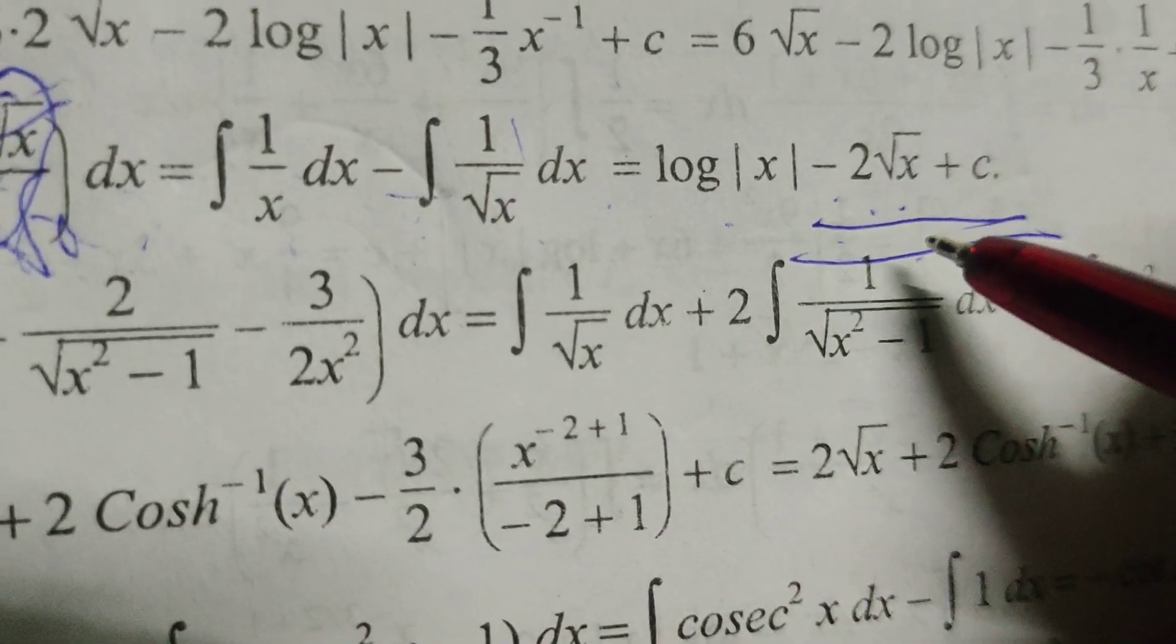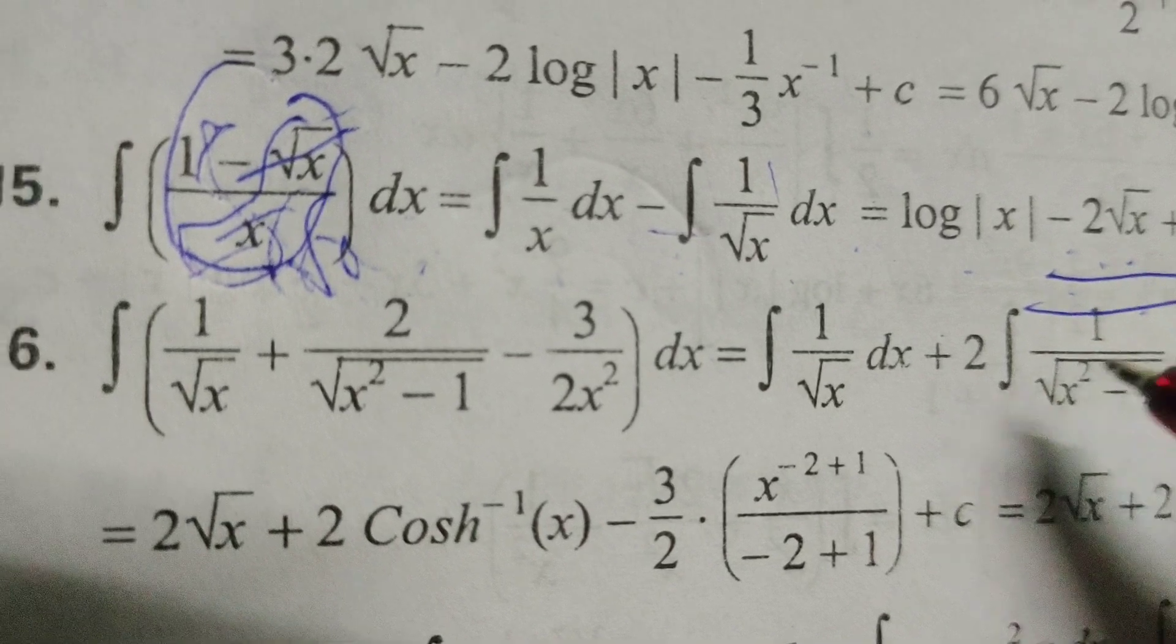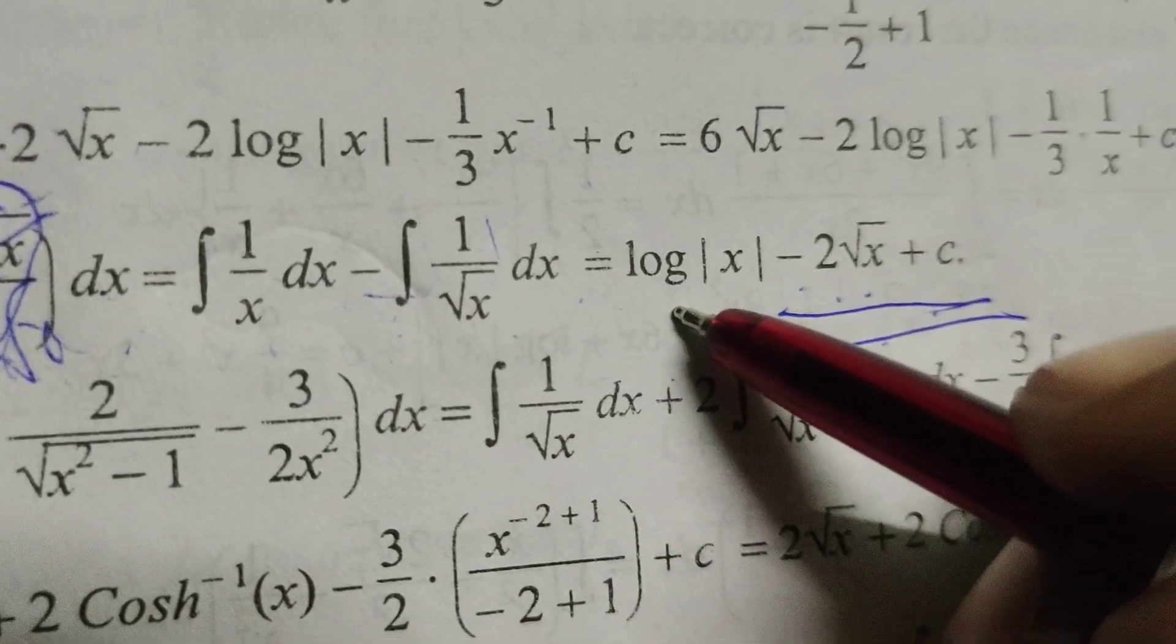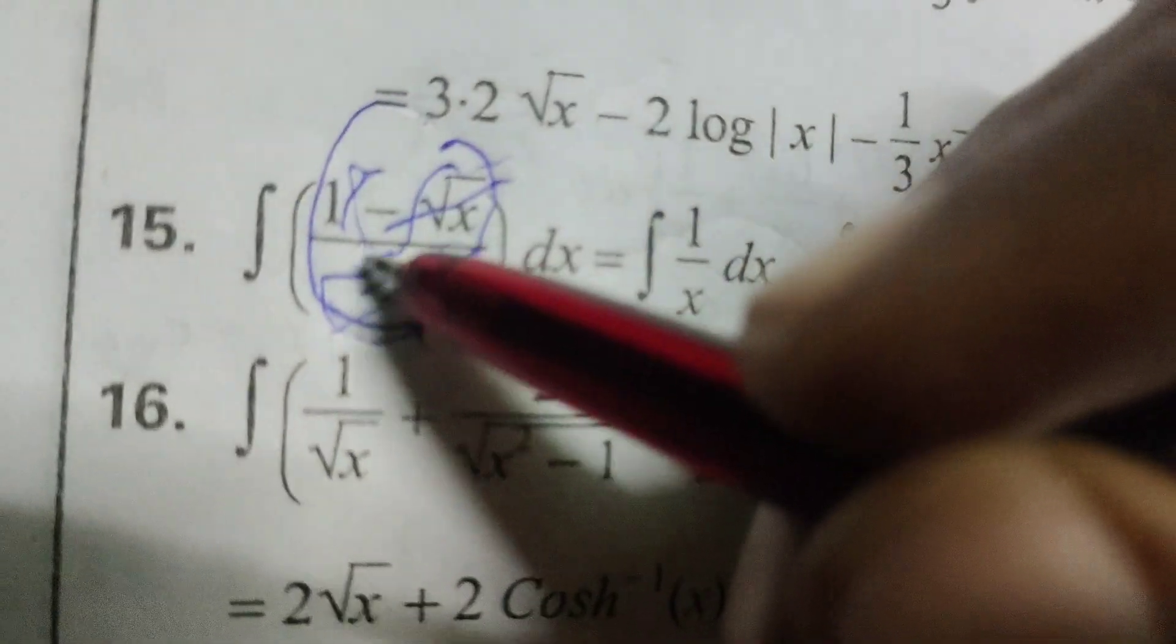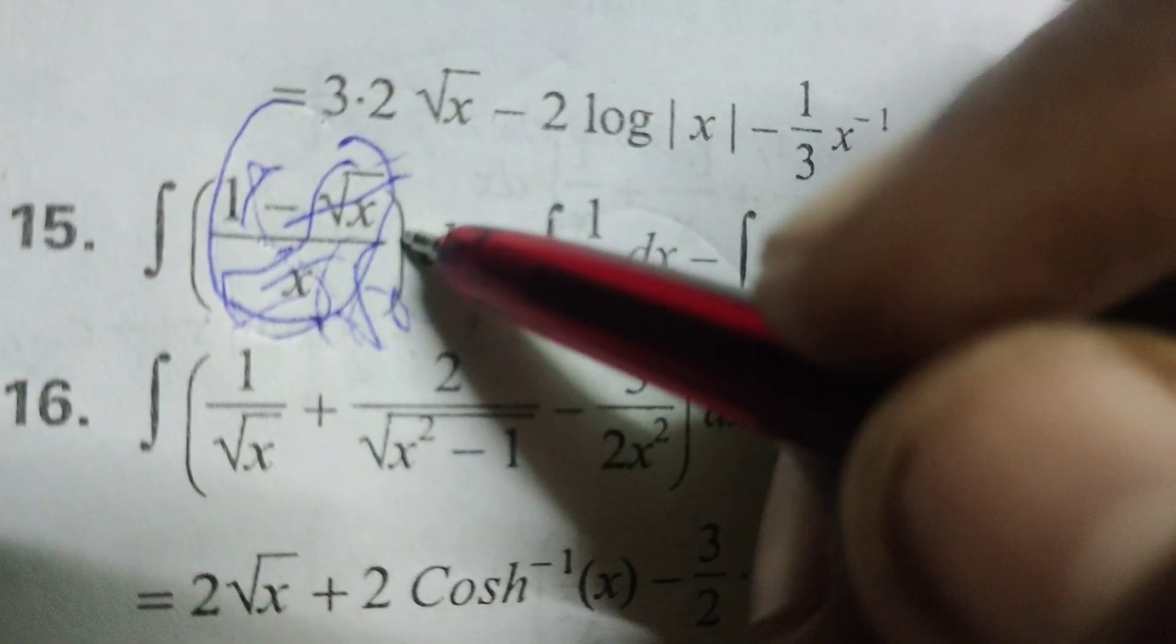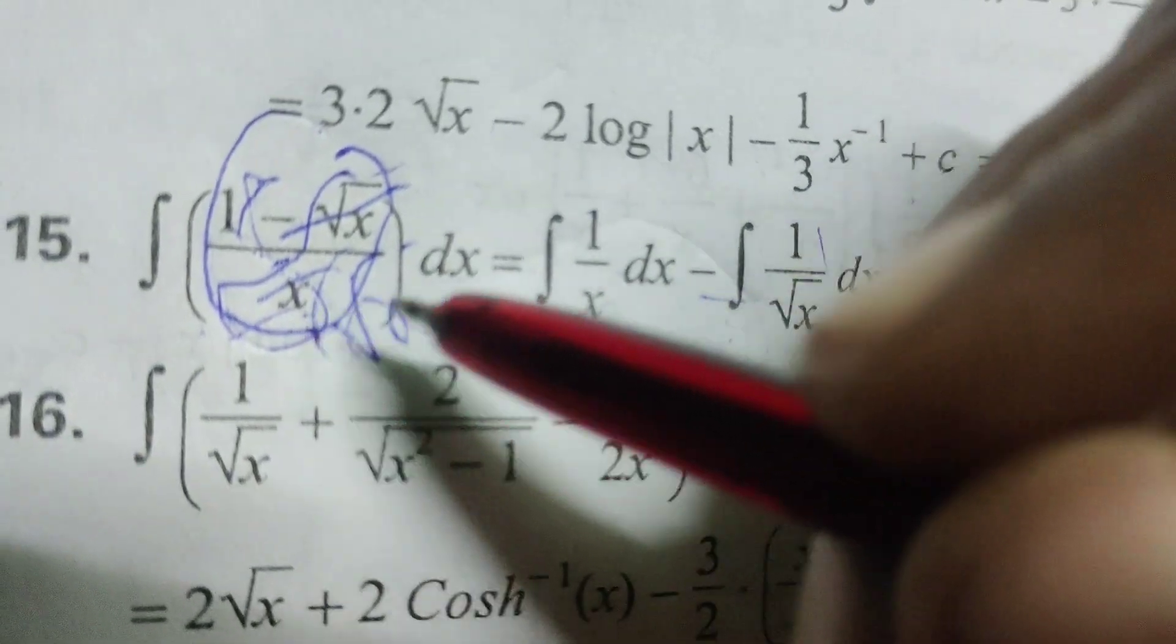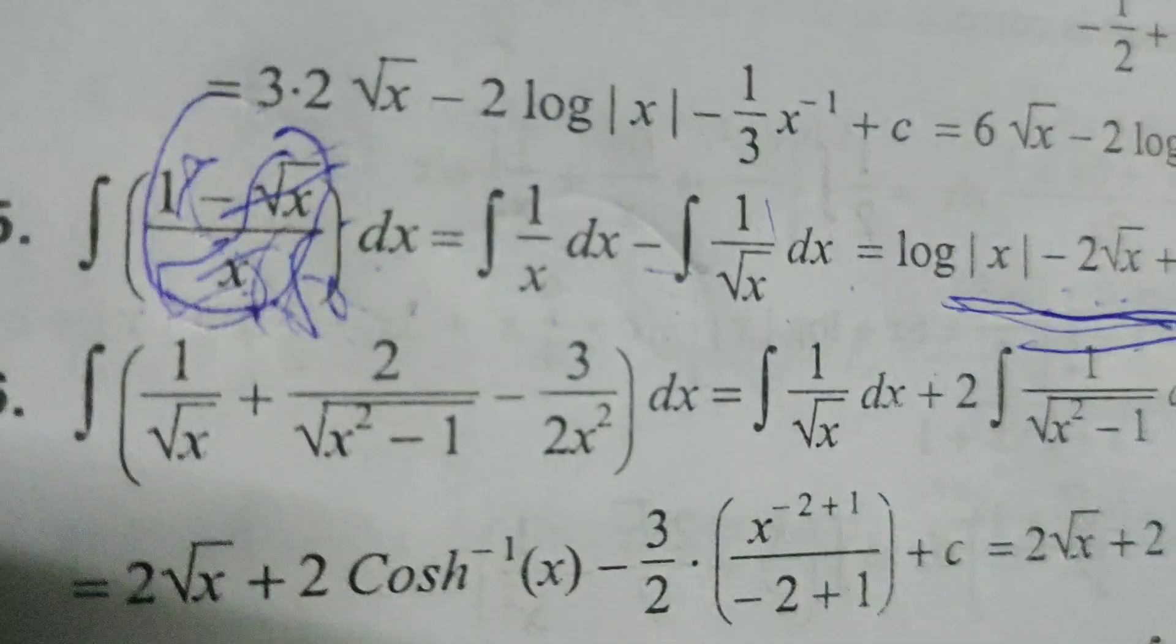adding the constant C. Okay, this is the solution by the given evaluated integral. Integral of 1 minus root x by x dx. Okay, thank you.